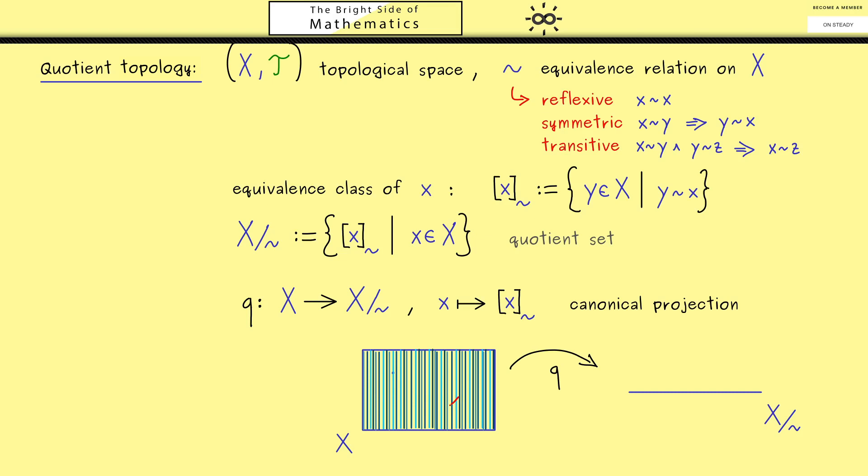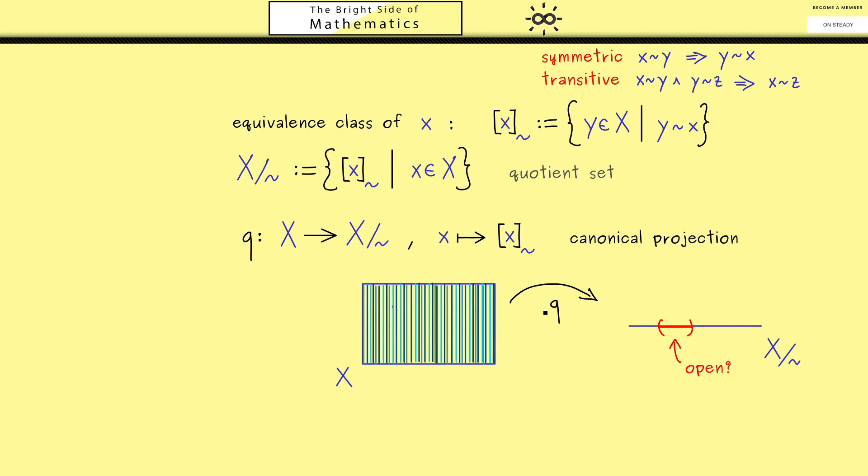Okay, now please recall here on the left-hand side we know what open sets are. For example, this subset here is an open set when it lies in τ. However, here on the right-hand side, open does not make sense yet. Hence we need a suitable definition for open sets here in our quotient set. This means that in some sense this should be compatible to the openness in the original set X here on the left-hand side. And now you might already guess that this should work with the map q.